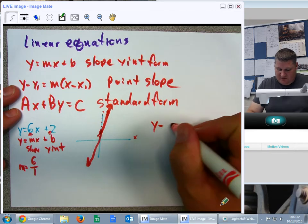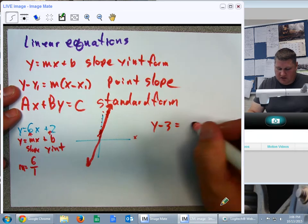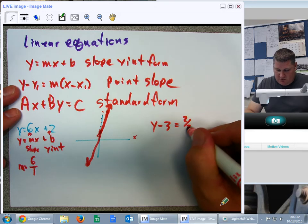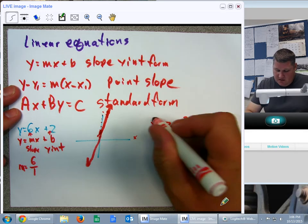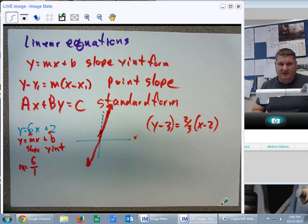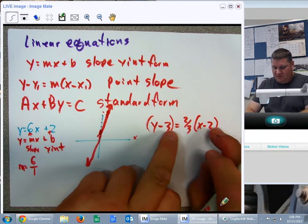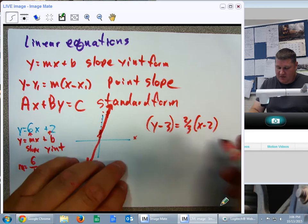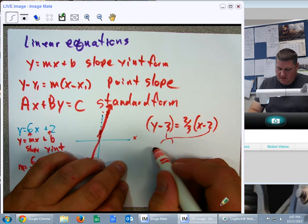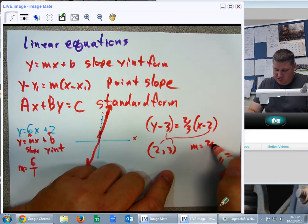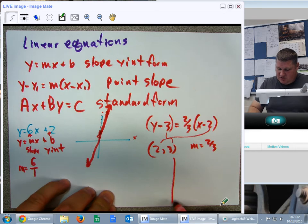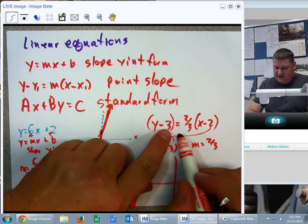If I give a point like this, y minus 3 equals, oh, I don't know, 2 thirds x minus 2, this would be in point slope form. You can tell it's point slope form because I can clearly pull a point out of here, 2, 3, and a slope, 2 thirds. And now, to graph that, I say, well, what's the x part of the point?